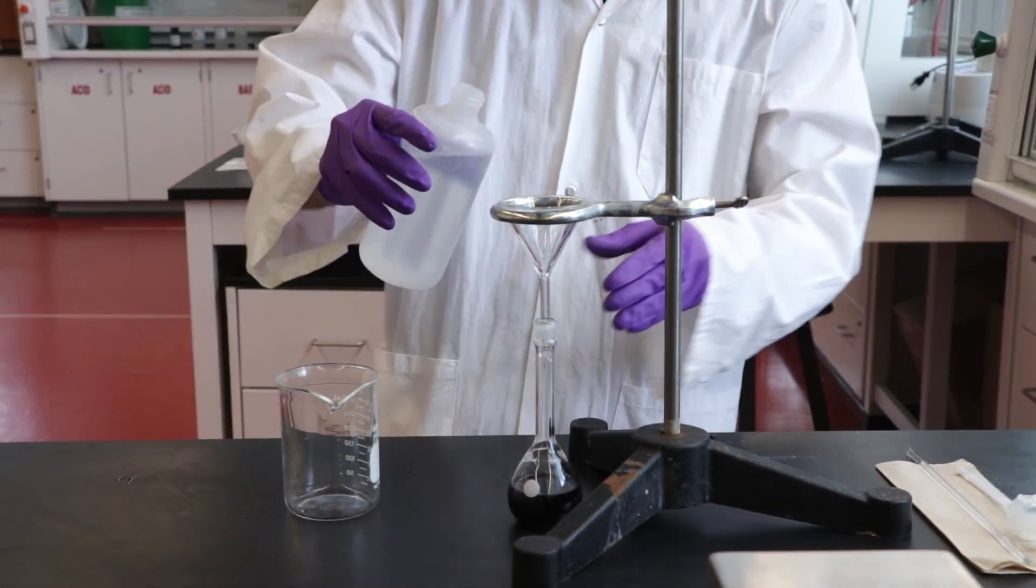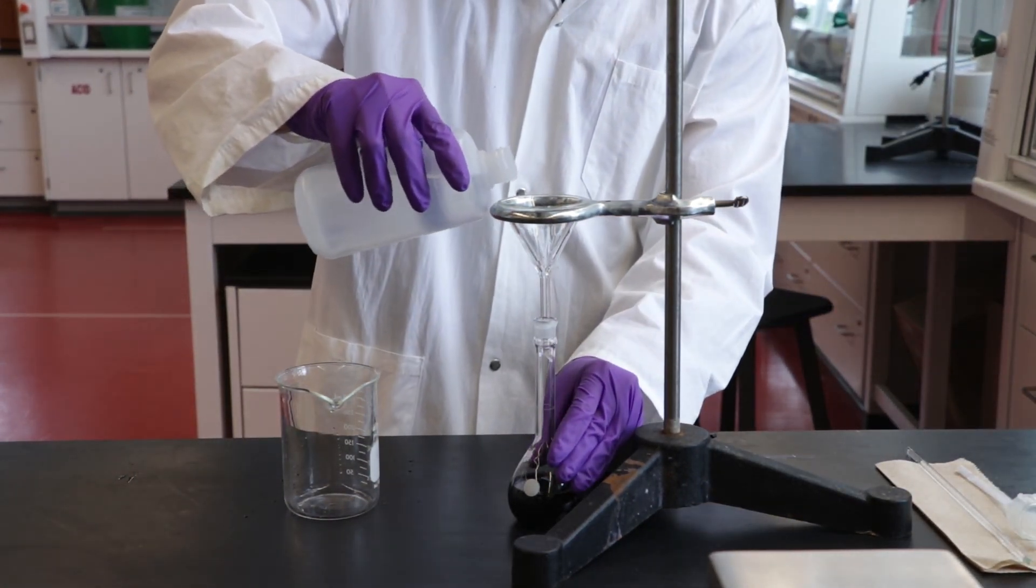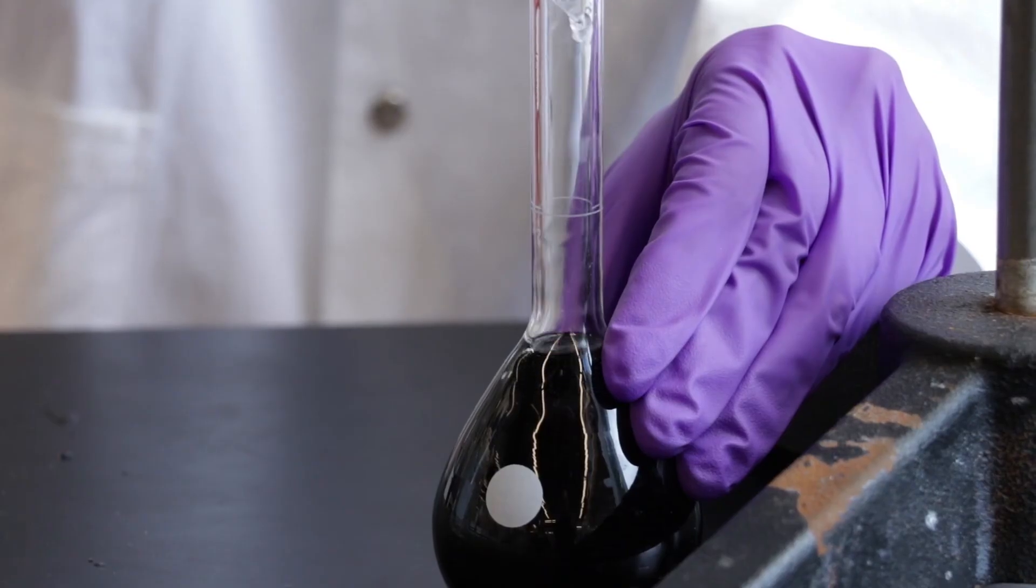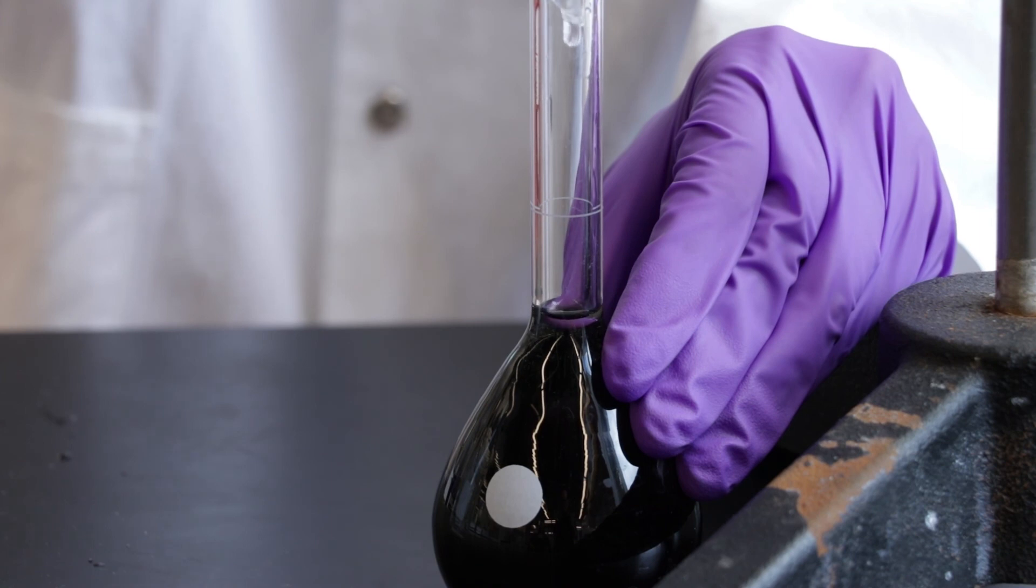Carefully fill the volumetric flask until the solution is 1 to 2 centimeters below the etched mark. Remember to be careful when doing this as the volumetric flask will fill up faster than you think.